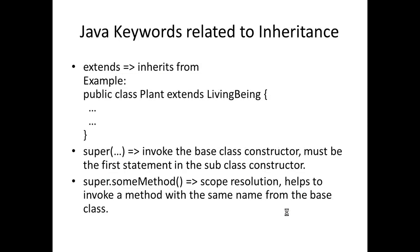The Java keyword related to inheritance is extends, which means inherits from. So when you say public class Plant extends LivingBeing, it means Plant inherits from the LivingBeing class, and whatever attributes and methods are defined in LivingBeing are accessible in Plant as well, as long as the access modifier is public in the base class. There is also a keyword called super, which is used to invoke the base class constructor from the derived class constructor. The derived class constructor should always invoke the parent class constructor as the first statement in its body, and after initializing the parent object, it can then initialize its own attributes.